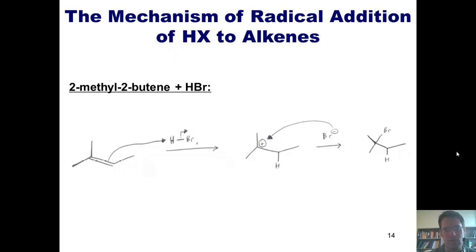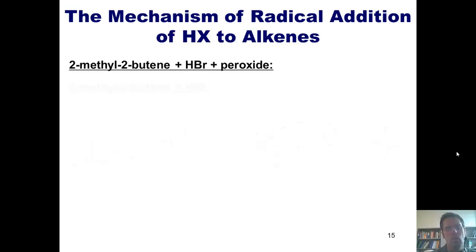But what occurs if I react 2-methyl-2-butene and HBr under radical conditions, that is, adding peroxide and light or heat? As I've shown before, the first step that occurs is initiation. The peroxide molecule breaks apart homolytically, forming two individual oxygen radical molecules.